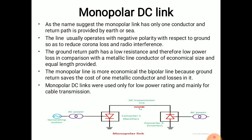The monopolar DC link figure shows the left-hand side as the generating station and the right-hand side as the receiving end. At the generating station, Converter 1 operates and converts AC power to DC power. At the receiving end, Converter 2 operates and converts DC power to AC power. The converters at sending end and receiving end are identical; whether they work as rectifier or inverter is determined by the direction of power flow.